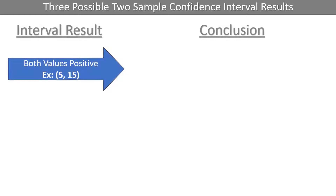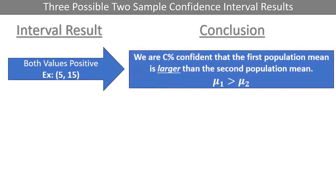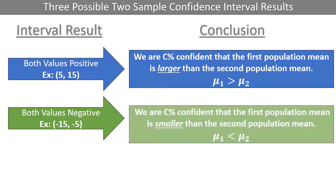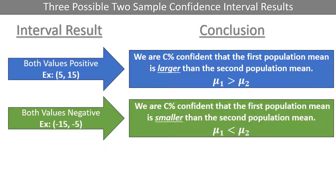For two-sample confidence intervals, there are three possible end results. If both values are positive, such as an interval ranging from 5 to 15, that means we are C% confident that the first population mean is larger than the second population mean. If both values are negative, such as negative 15 to negative 5, that means we are C% confident that the first population mean is smaller than the second population mean.